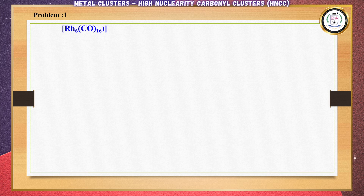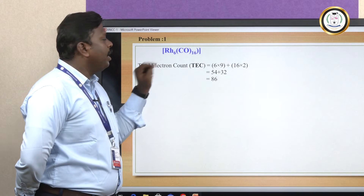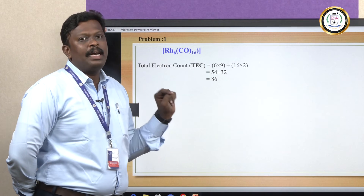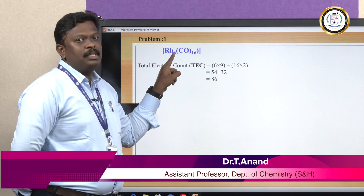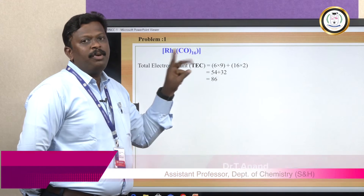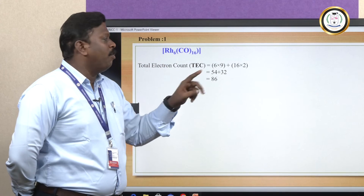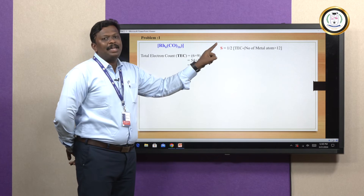First problem: Rh6(CO)16. Step one is to calculate the total electron count. Rhodium has 9 valence electrons, multiplied by 6 metal atoms. Each CO contributes 2 electrons, and there are 16 CO ligands. So the total electron count is 54 + 32 = 86 electrons. Step two is to calculate S: (1/2) × (86 − 6×12) = 7. So S = 7.